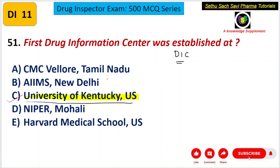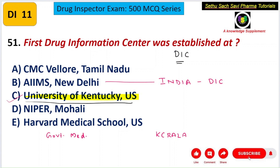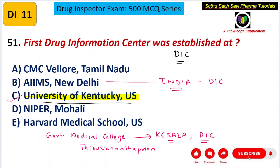If the question asks for the first Drug Information Center in India, the answer is All India Institute of Medical Sciences, New Delhi. If the question asks for the first Drug Information Center in Kerala, the correct answer is Government Medical College, Thiruvananthapuram. If no place is mentioned, it refers to the first in the world — University of Kentucky.